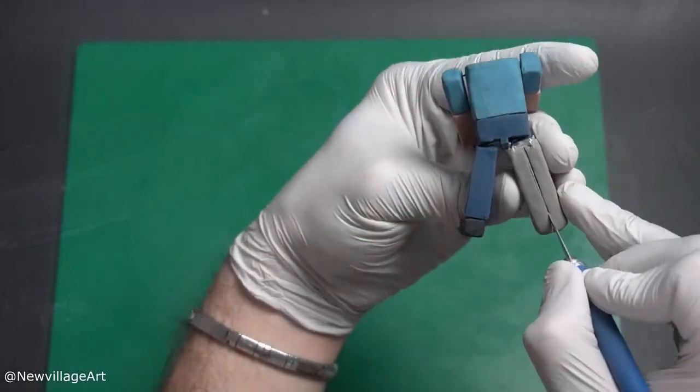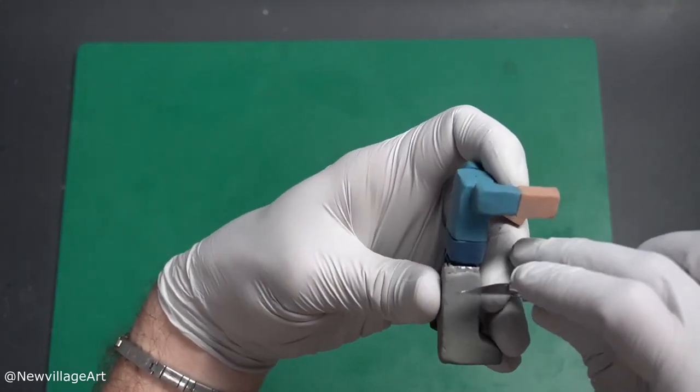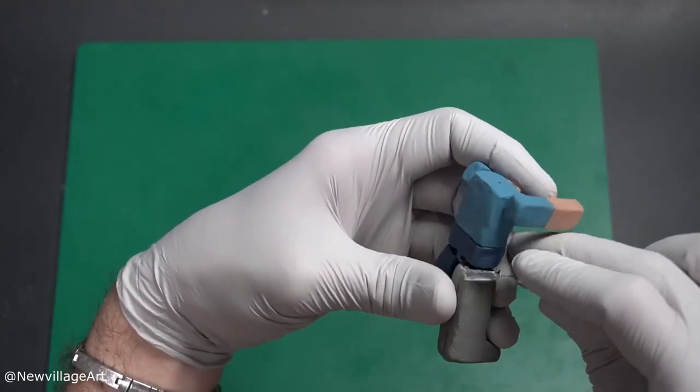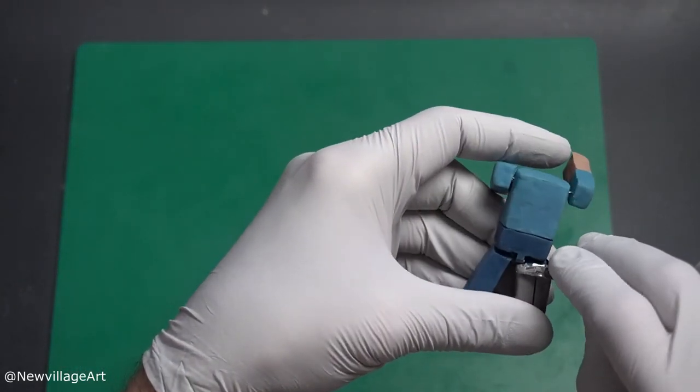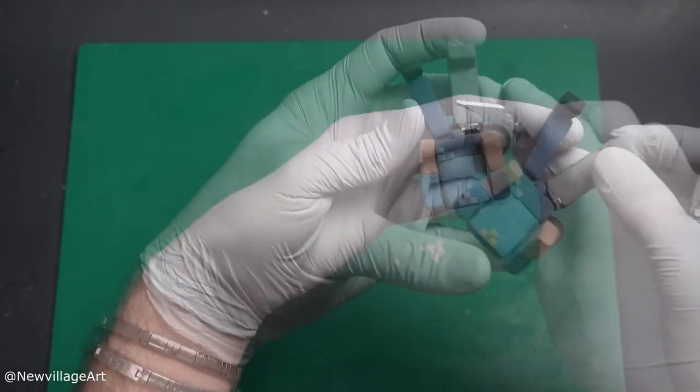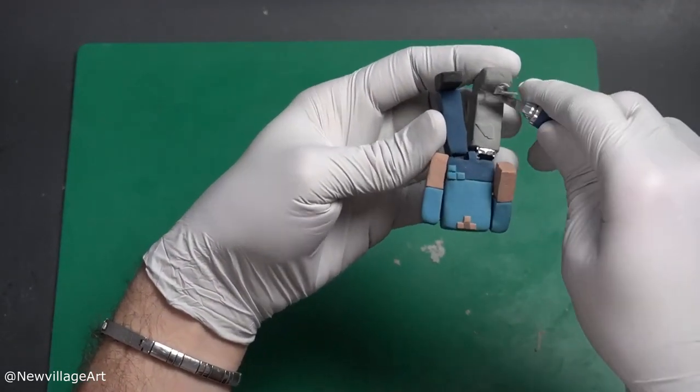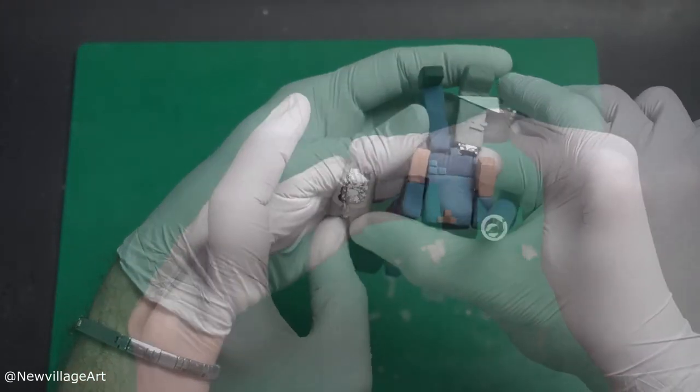For the leg, I made a cut behind the leg to be able to remove the piece once baked. Here I'm cleaning the baked leggings and carving some of the details.